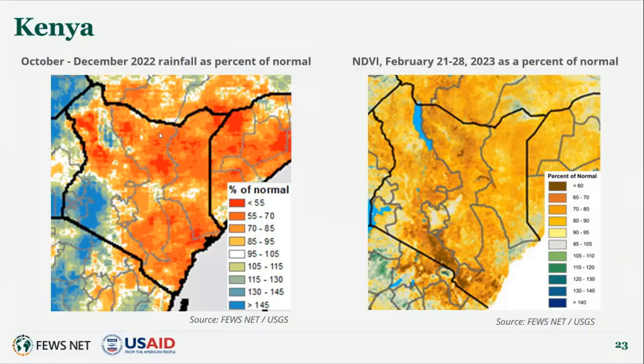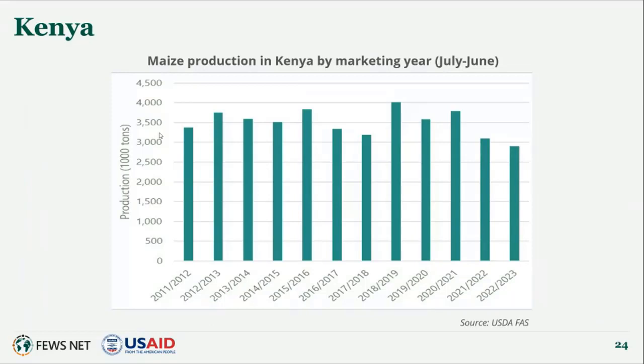Turning to Kenya: rainfall this past season was below average, with most of northern and eastern Kenya receiving less than 85% of the 40-year average, marking the fifth consecutive below average season. The Ministry of Agriculture estimates Kenya's 2022 national harvest is about 10 to 15 percent below the five-year average, attributed to poor rainfall and high input prices. In marginal agricultural areas, area planted for the October to December short rains was about 10 to 25 percent below average for maize. In coastal areas where rainfall was relatively better and seed availability improved, we're seeing somewhat better harvest.